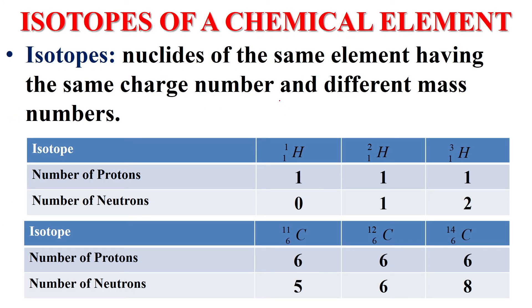Now isotopes. Isotopes of a chemical element. We all know this definition in chemistry. What is meant by isotopes? Isotopes are of the same element having the same charge number but different mass numbers. For example, H-1-1, H-1-2, H-1-3.